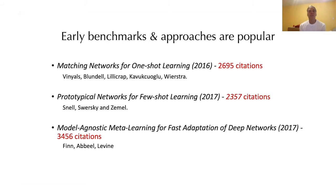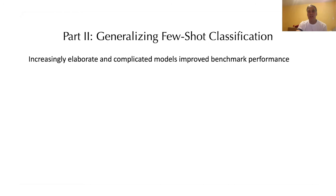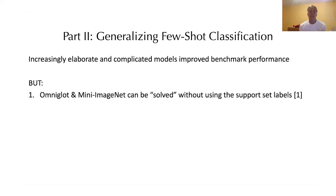So this is a bit of history. The early benchmarks and approaches — matching networks, prototypical networks, and MAML or model-agnostic meta-learning — have all gotten a lot of citations and become very popular. But now we want to take a step back and ask where we are. In the intervening years, people developed much more complicated and elaborate models that actually improve benchmark performance. But at the same time, others have shown that these benchmarks can be solved — getting really good results without using the support set labels at all, using kind of unsupervised approaches.